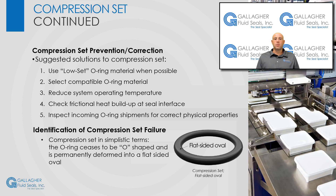Suggested solutions to the causes of compression set are as follows: using low set O-ring material whenever possible; selecting O-ring material that is compatible with the intended service conditions; reducing the system operating temperature; checking frictional heat buildup at the seal interface and reducing if excessive; inspecting incoming O-ring shipments for correct physical properties. So, how do you identify compression set failure?